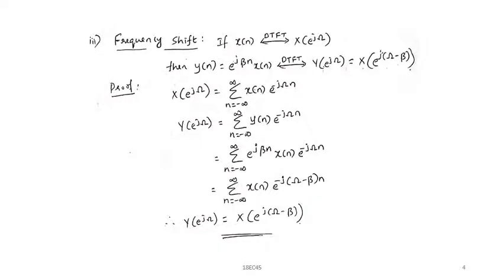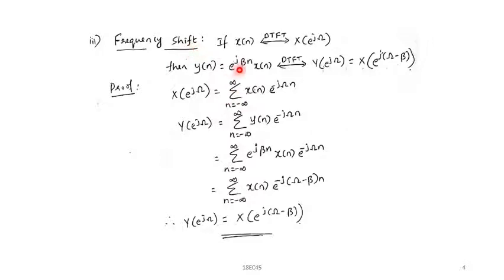The third property is the frequency shift property. In the previous property we discussed a shift in the time domain; here we discuss a shift in the frequency domain. If x(n) has DTFT X(e^{j\omega}), and y(n) = e^{j\beta n}·x(n) — that is, we multiply by an exponential term — then its DTFT is Y(e^{j\omega}) = X(e^{j(\omega−\beta)}). There is a shift in frequency, so this property is called frequency shift.